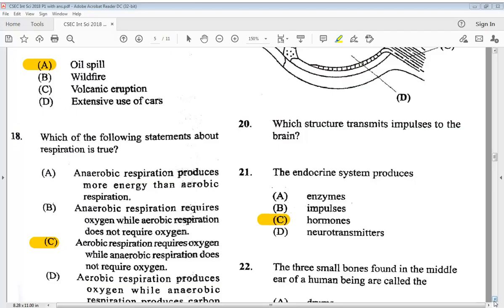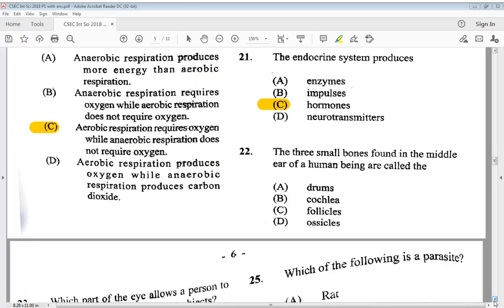Let's go to number 22. The three small bones found in the middle ear of a human being are called A, drums, B, cochlea, C, follicles, D, ossicles. We know it is at D.